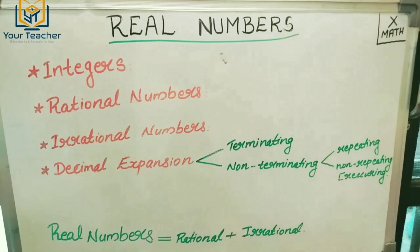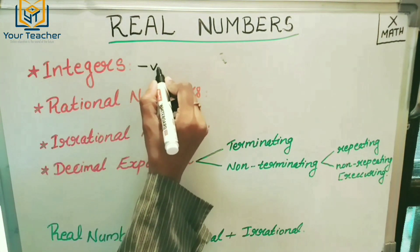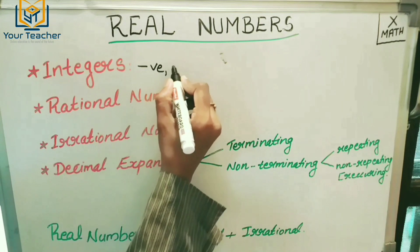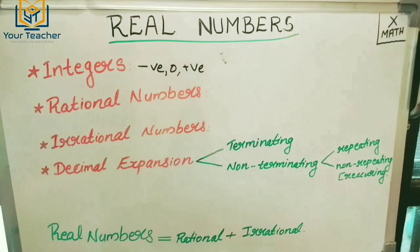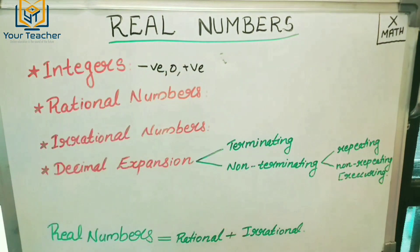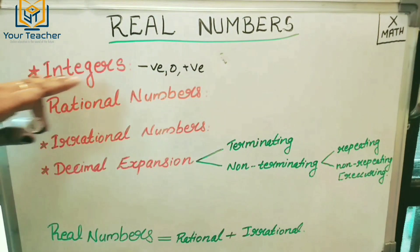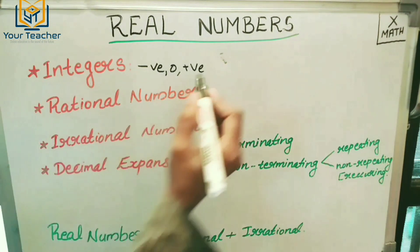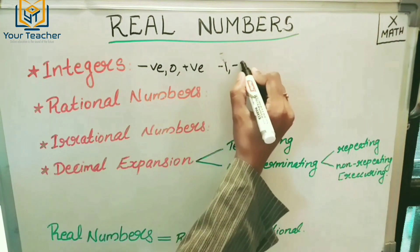First one: Integers. What are integers? Integers include Negative Numbers, Zero, and Positive Numbers. For example, minus 1, minus 2 — those are the negative numbers within integers.